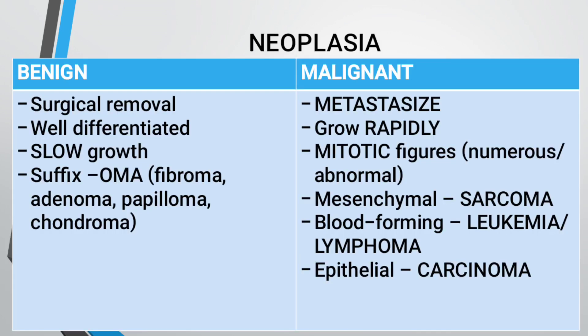Neoplasia can be classified into two types: benign and malignant. Under benign, we can do surgical removal; they are well differentiated and slow in growth. The suffix used for benign neoplasia is '-oma.' Examples include fibroma, adenoma, papilloma, and condyloma.